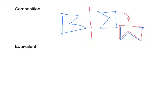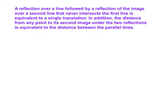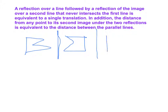An equivalent transformation is when a single isometry and a two-step composition produce the same final image. For example, reflecting a figure and then reflecting it again is a two-step composition that can also be achieved by a single translation. A reflection over a line followed by a reflection over a second parallel line is equivalent to a single translation.